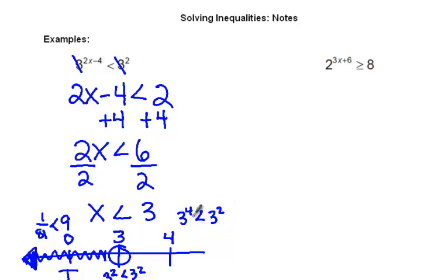And 3 to the 4th is 81. 3 squared is 9. 81 is definitely not less than 9, so it's false. And this inequality here is accurately portrayed with our solution.